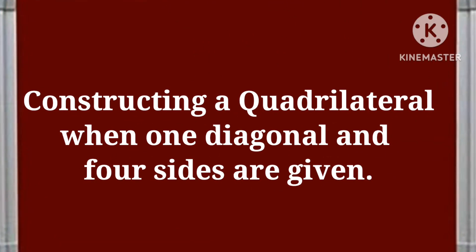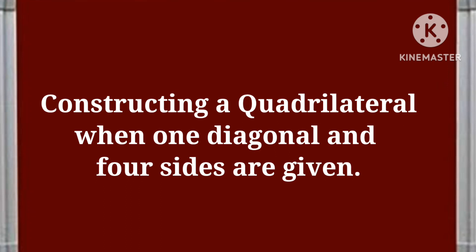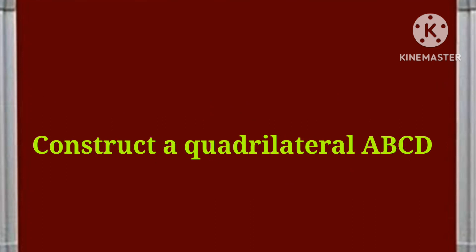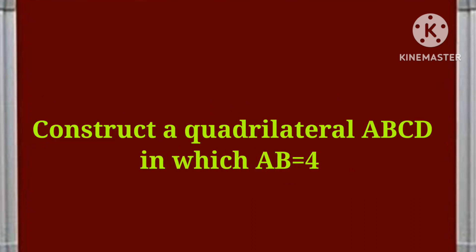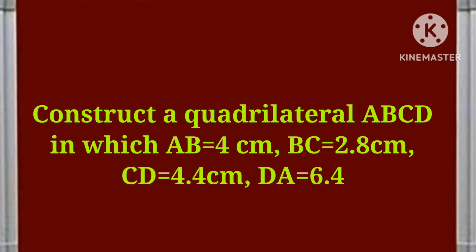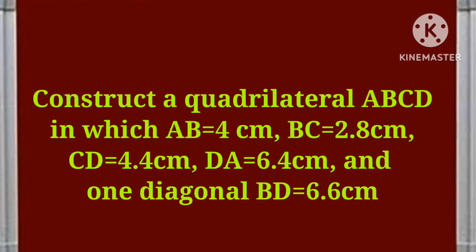In my first diagram I am going to show you how to construct a quadrilateral when the measurements of one diagonal and four sides are given. The condition is: construct a quadrilateral ABCD in which AB = 4 cm, BC = 2.8 cm, CD = 4.4 cm, DA = 6.4 cm, and one diagonal BD = 6.6 cm. Let's see how to construct it.